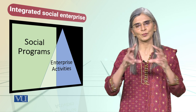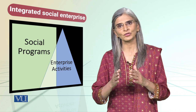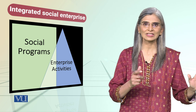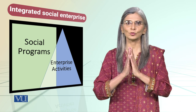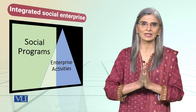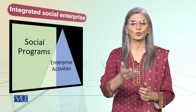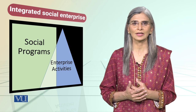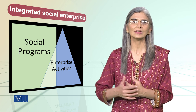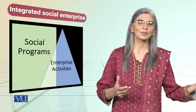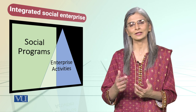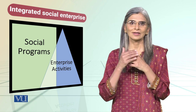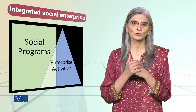Diagram का जो हिस्सा तीसरे color में आपको नजर आ रहा है जहांपे square और triangle जो हैं वो space share कर रहे हैं — वो integrated part है। Activities अलग हैं, program अलग है, लेकिन दोनों किसी जगह पर overlap करते हैं — मसलन activities के ज़रिए से program को fund करना, जैसे Iona enterprise की example दी थी जहां elderly care का program है लेकिन commercial activity के ज़रिए वो अपने mission को serve कर रहे हैं। So this is integrated model of social entrepreneurship.